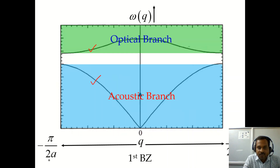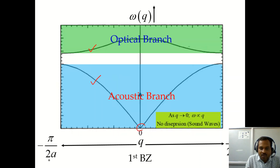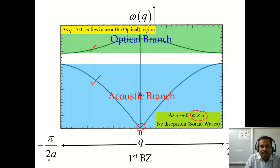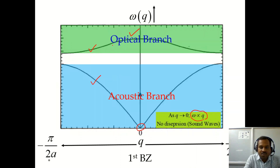The lower-frequency branch is called the acoustic branch because, as q tends to zero, ω is proportional to q — there is no dispersion and it behaves like a sound wave inside the solid. The higher-frequency branch is called the optical branch because, as q tends to zero, its frequency lies in the near-IR or optical region.